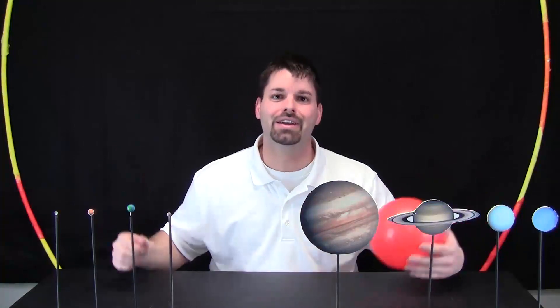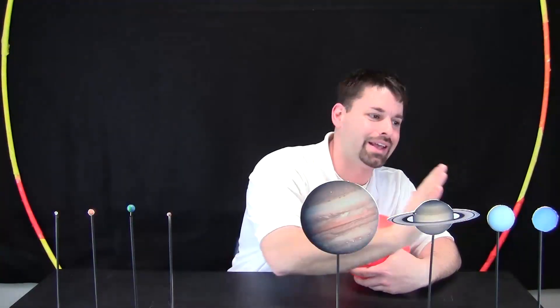What about the Sun? Behind me is a yellow and orange circle that shows you how big the Sun is compared to these eight planets.